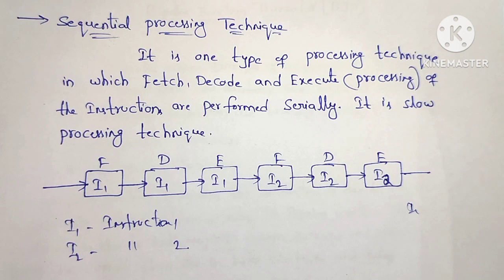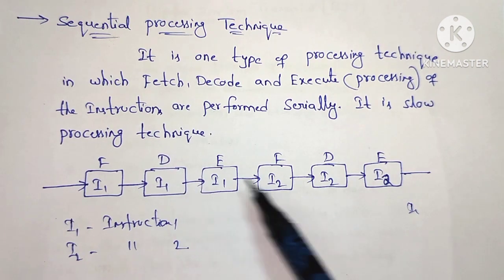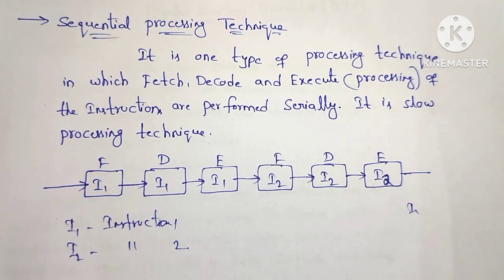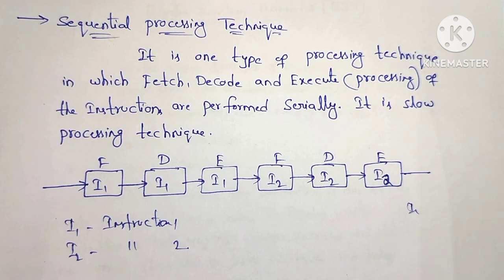List the steps involved in sequential processing. There are three steps involved in sequential processing technique. The steps are fetching, decoding, and executing. This is the sequential processing technique.